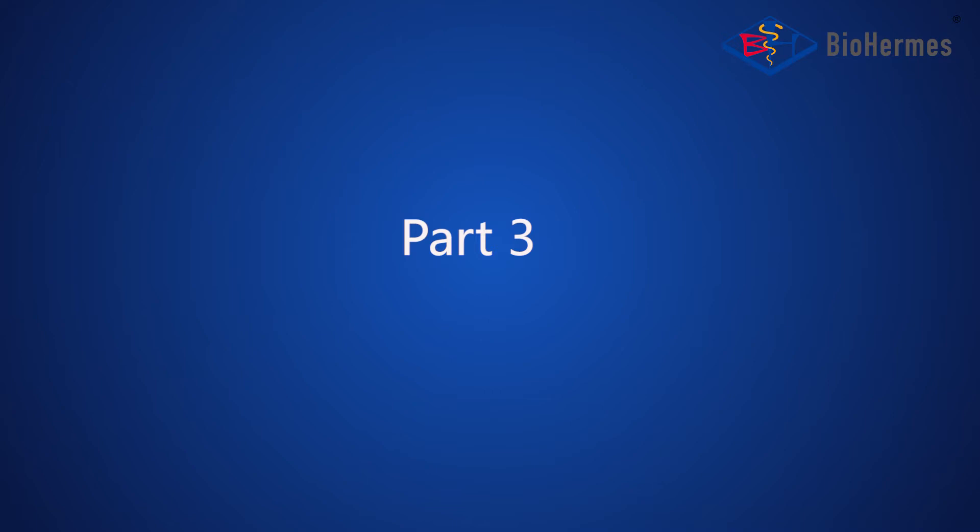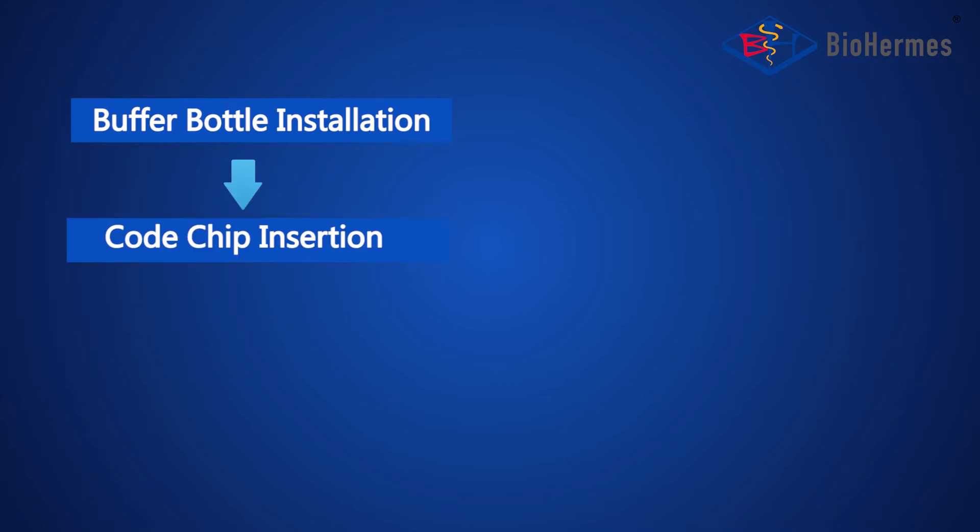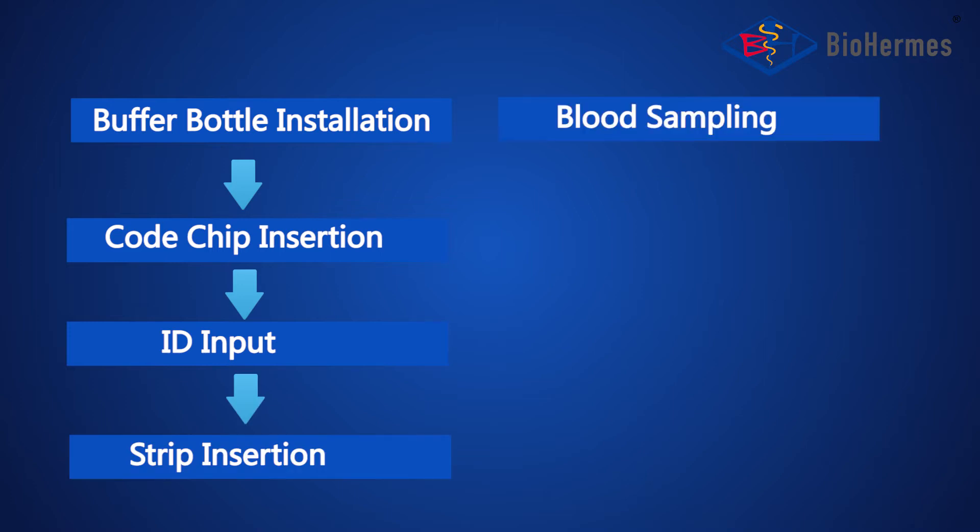Part 3: HbA1c Testing. Testing Procedure. The testing procedure includes buffer bottle installation, code chip insertion, ID input, strip insertion, blood sampling, blood adding, and result reading.